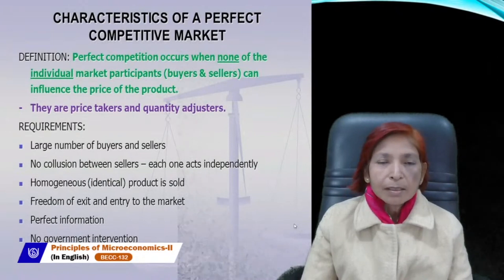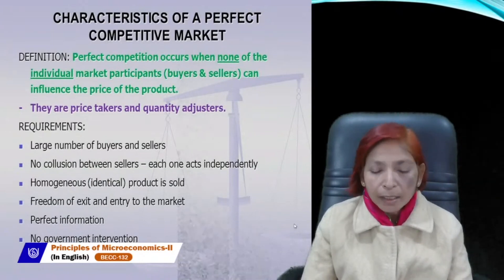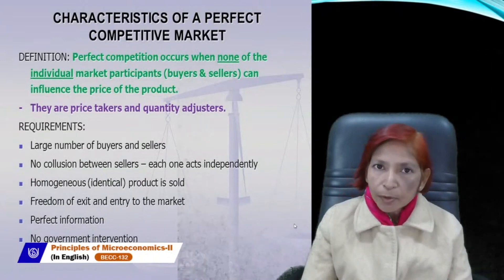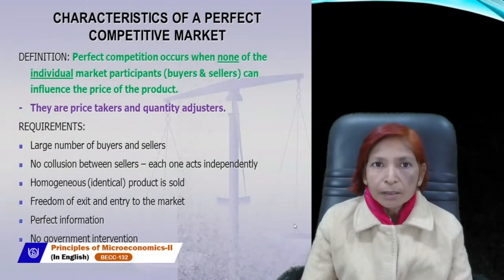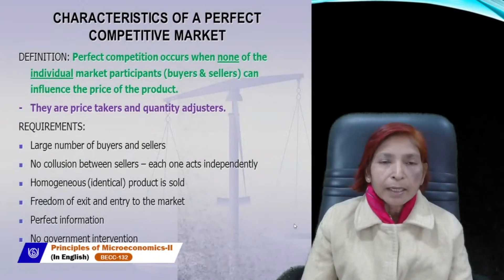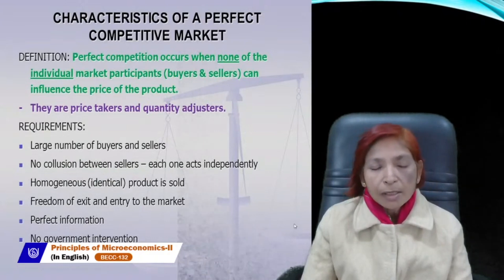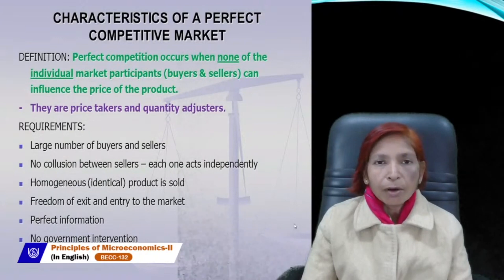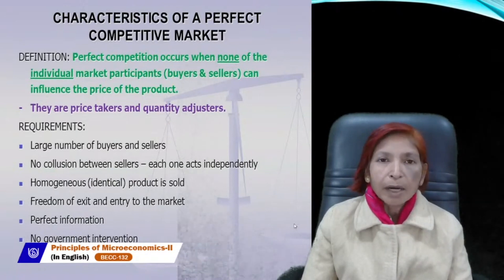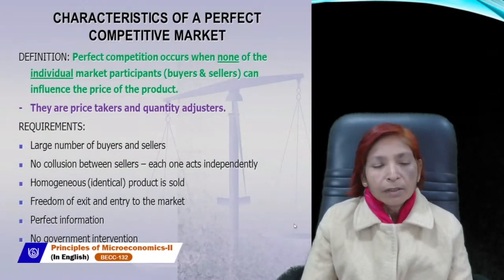In brief, perfect competition is a market where a very large number of buyers and sellers exist. All sellers produce homogeneous or identical products with no difference in color, size, design, packing, or price. All sellers have full freedom to enter and exit the market at any time, and all sellers and buyers have perfect knowledge regarding the product and price. There is no government intervention, and factors of production are assumed to be perfectly mobile.